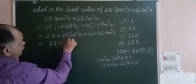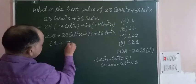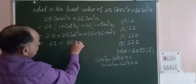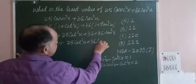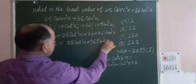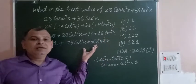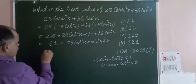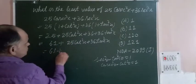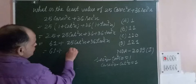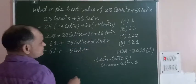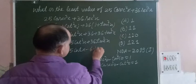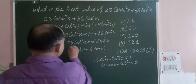Now we make it as a complete square, so we write it as (5 cotx - 6 tanx)².